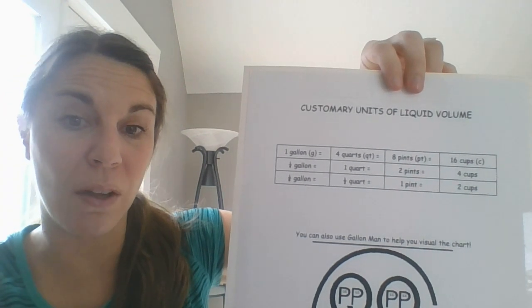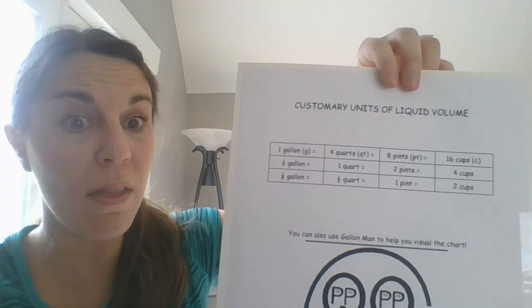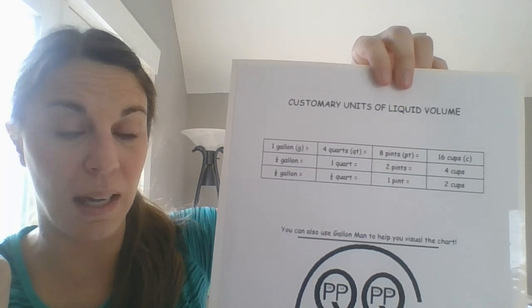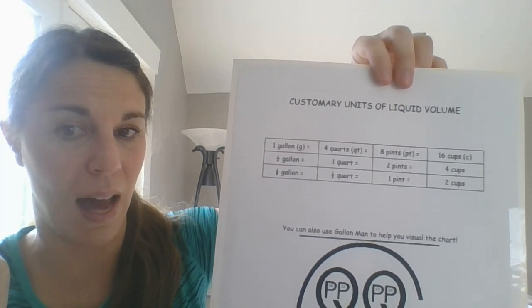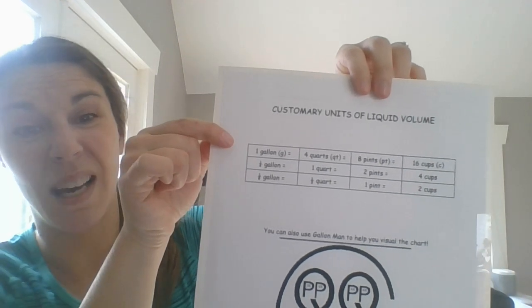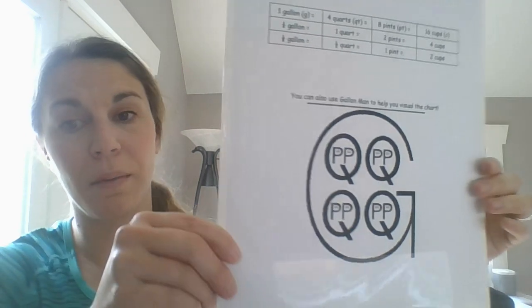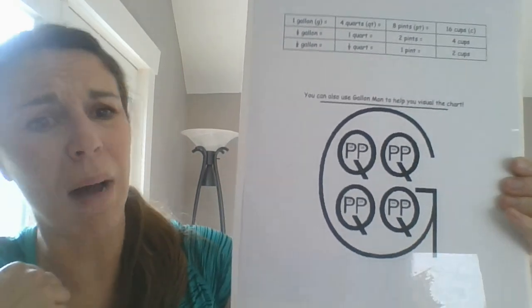And then in the table, I put other ones, like what if you had a fourth of a gallon, what would that be in quarts, pints and cups? And then even if you had an eighth of a gallon. So this is going to be really important when we're doing our conversions. But I also put gallon man.